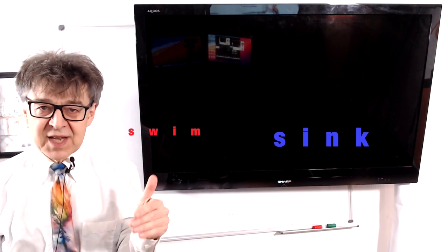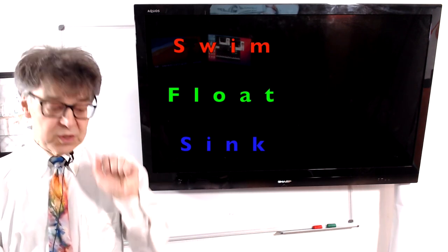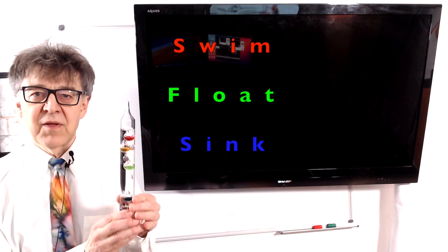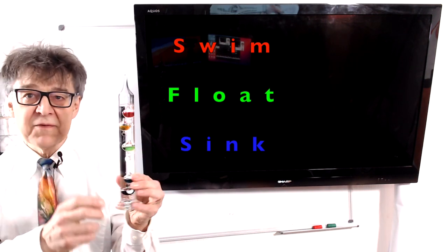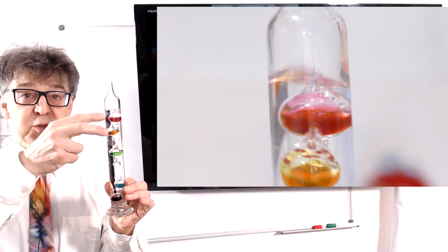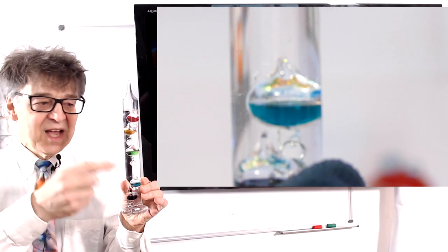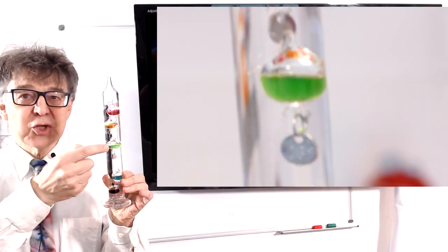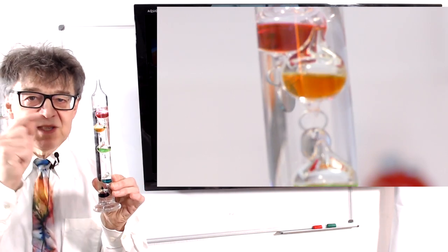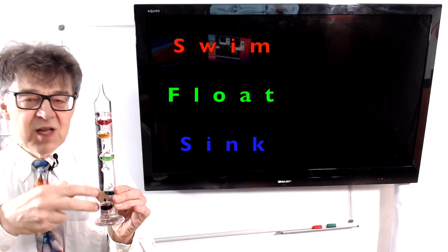So remember, objects will sink or swim in a liquid depending on their density. And they can even float. This is a thermometer in which we have five different colored spheres. Two swim, two sink or lie on the ground, and one, the green one, actually floats. The density of this green sphere is exactly the same as the density of the liquid.